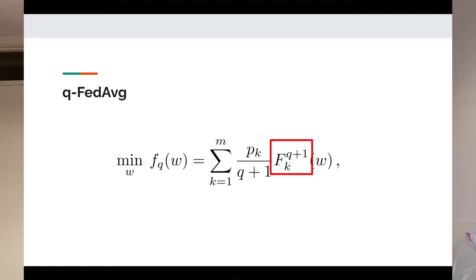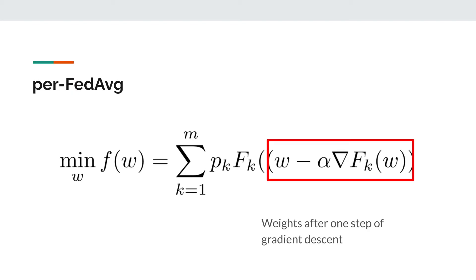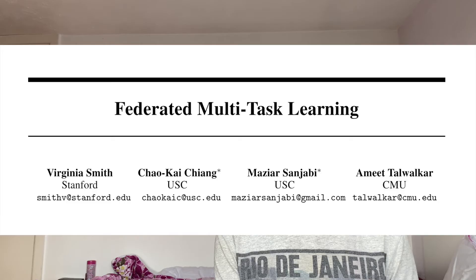Another approach, PerFedAverage, seeks to train a model that can be personalised to each device after running a few steps of local gradient descent. The loss function now changes from the loss on the current weights at that round, to the loss on the weights after a step of gradient descent. If you're familiar with meta-learning, this uses the MAML approach and formulates federated learning as a multitask problem, where each client's distribution is a separate task. As part of my master's degree at Cambridge, I've actually compared PerFedAverage against QFedAverage on heterogeneous data.